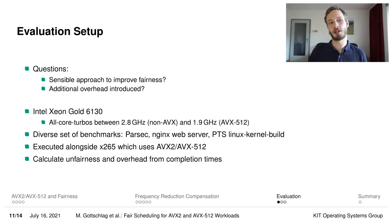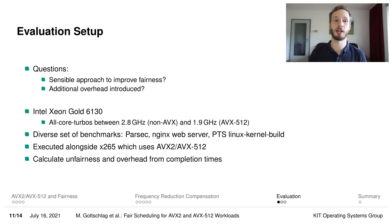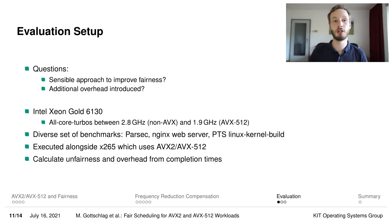We evaluated the resulting prototype mainly to answer two questions: first, is this actually a sensible approach to improve scheduling fairness? And second, how much additional overhead is introduced, because this is code that is very frequently executed during each individual context switch. We performed a number of experiments on a system with an Intel Xeon Gold 6130 server CPU, using a very wide range of benchmarks — everything from high-performance computing workloads from the Parsec benchmark suite to the Nginx web server and the Linux kernel build — all executed alongside the X265 video encoder, which supports AVX2 and AVX512 and therefore causes the corresponding frequency reduction. We measured the completion time of these benchmarks and calculated the unfairness as well as the overhead of frequency reduction compensation.